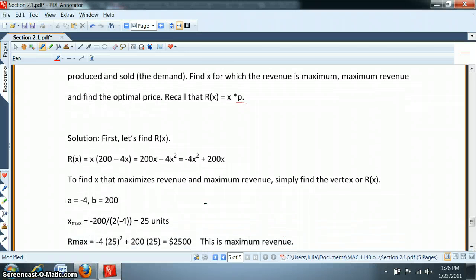If we have the demand equation, which is right here, we can simply multiply it by X, the number of items, and that's how we get a quadratic equation right here, which is negative 4X squared plus 200X. For us, A would be negative 4, B would be 200.